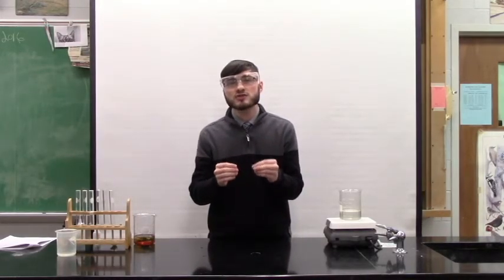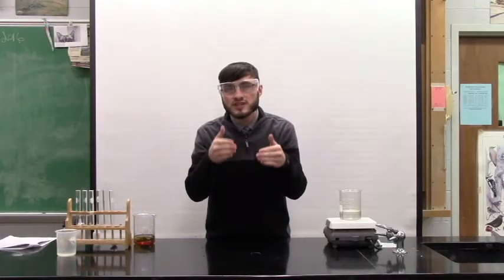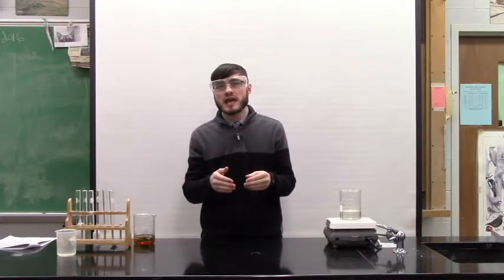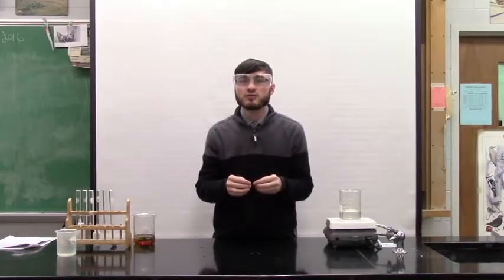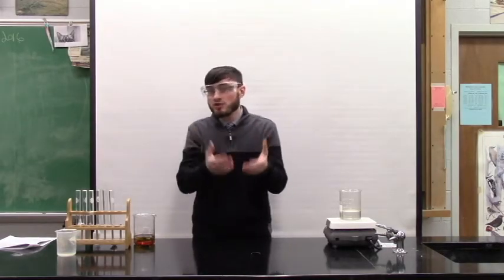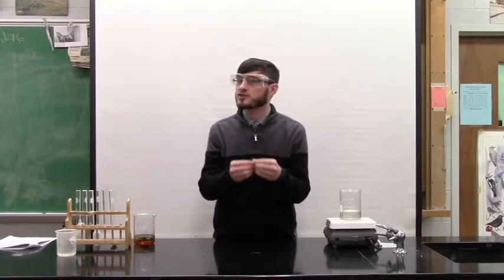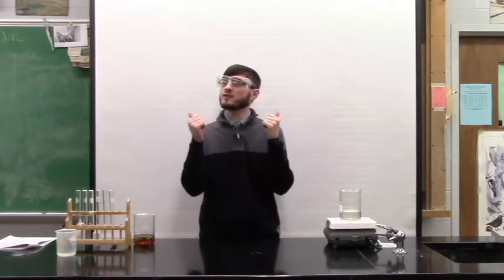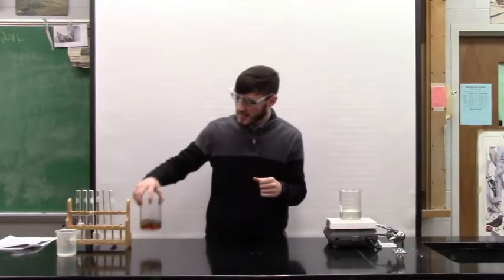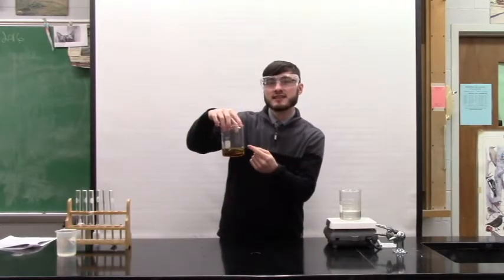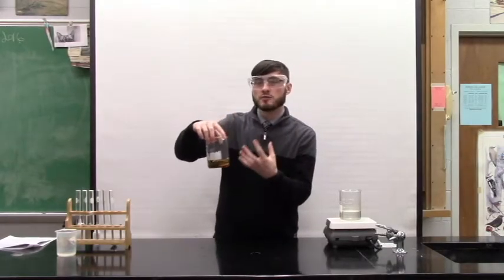Our starch indicator solution was able to diffuse into the cell and it indicated that inside the cell was starch. We knew there was starch in there because we put the starch in there. But what it also tells us is that starch did not diffuse out of the cell because then the entire beaker, both inside the cell and outside of the cell, would be black.